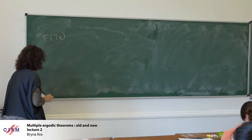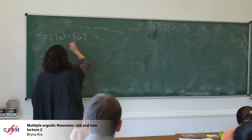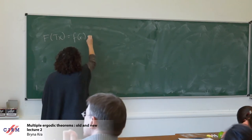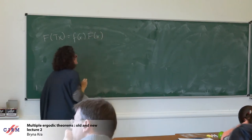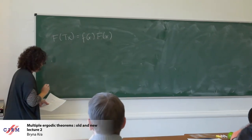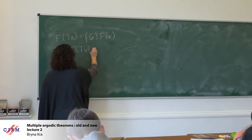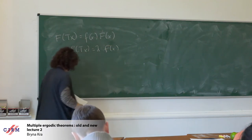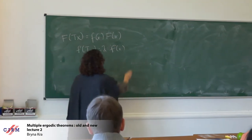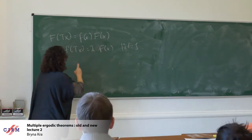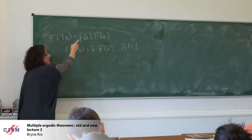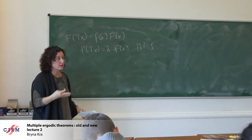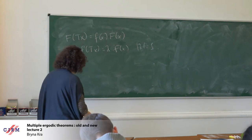What if I have a generalized eigenfunction? So I'll have some function F such that F(Tx) = f(x) times F(x), where little f is going to be an actual eigenfunction with eigenvalue lambda. Capital F is a generalized eigenfunction — meaning when I apply T to it, I don't just get a constant times F, but I get this product.